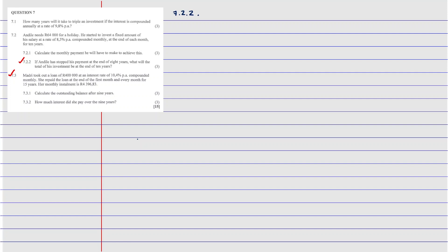Part two says: if Andinde stopped his payments at the end of eight years, what would be his total at the end of 10 years? To visualize the situation, we use a timeline from t0 to t10 — that is the full period. But Andinde stops paying at t8.